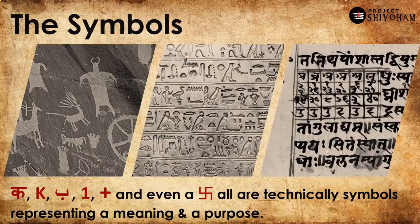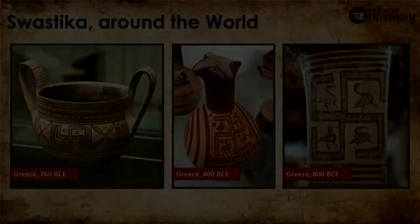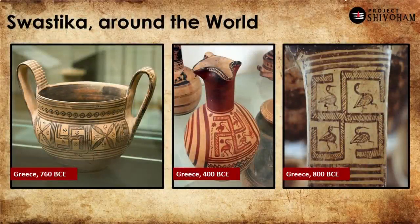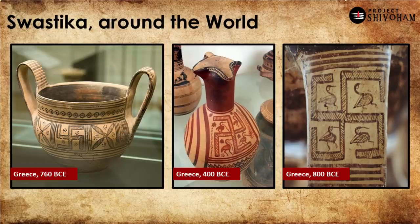A very interesting thing with Swastika is that it is one of the oldest symbols which has been continuously in existence for thousands of years. Take a look at the pottery here from Greece — 760 BC, 400 BC, 800 BC — so that's almost 3,000 years from now. And if you observe the way these symbols are hand-painted thousands of years ago, at least one thing we can say for sure: the symbol took center stage in the aesthetics of that particular pottery. It is not just ancillary decoration; the painting of Swastika on these pottery is clearly intentional, and the maker really wanted to have this taking center stage.